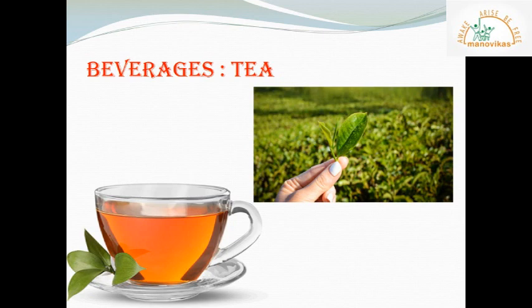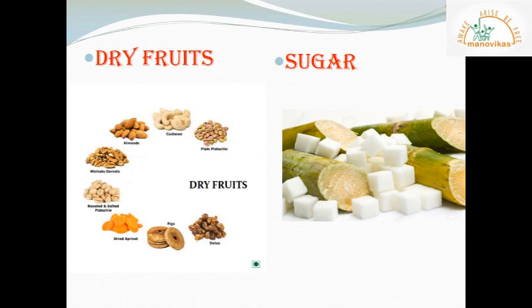Dry fruits are fruits that are dried naturally, dried in the sun, or dried with the help of machines. Dry fruits are considered a healthy snack. Sugar is harvested from the sugarcane plant and is used to prepare various kinds of food and sweets.